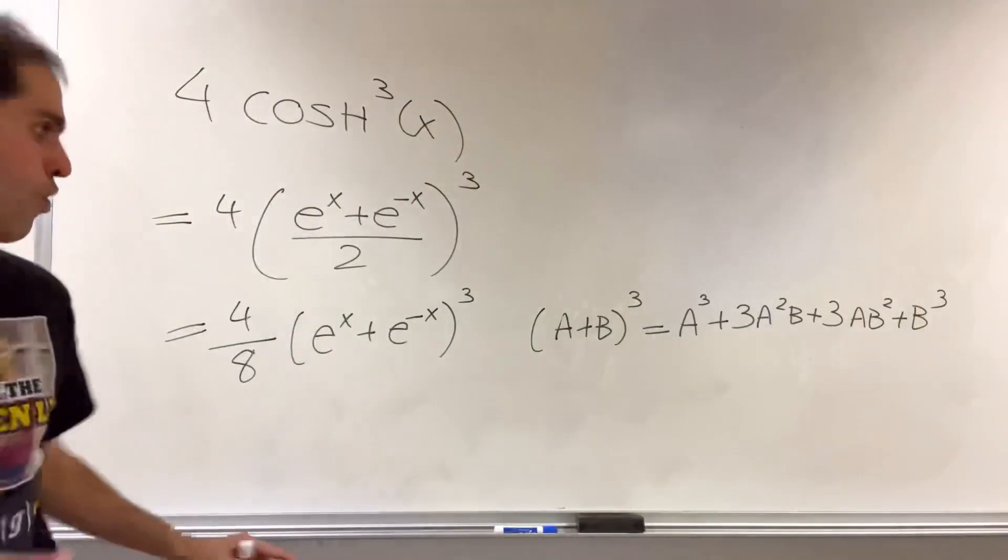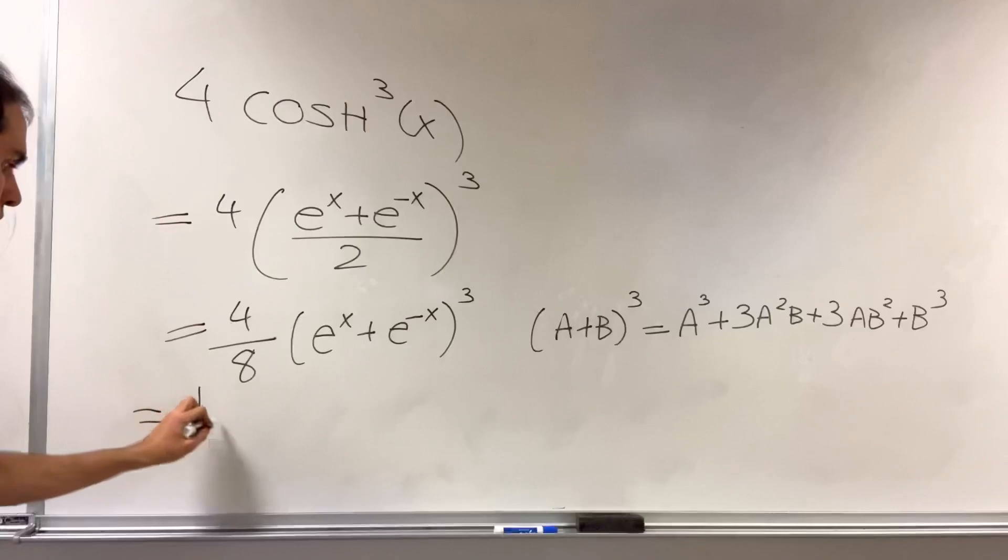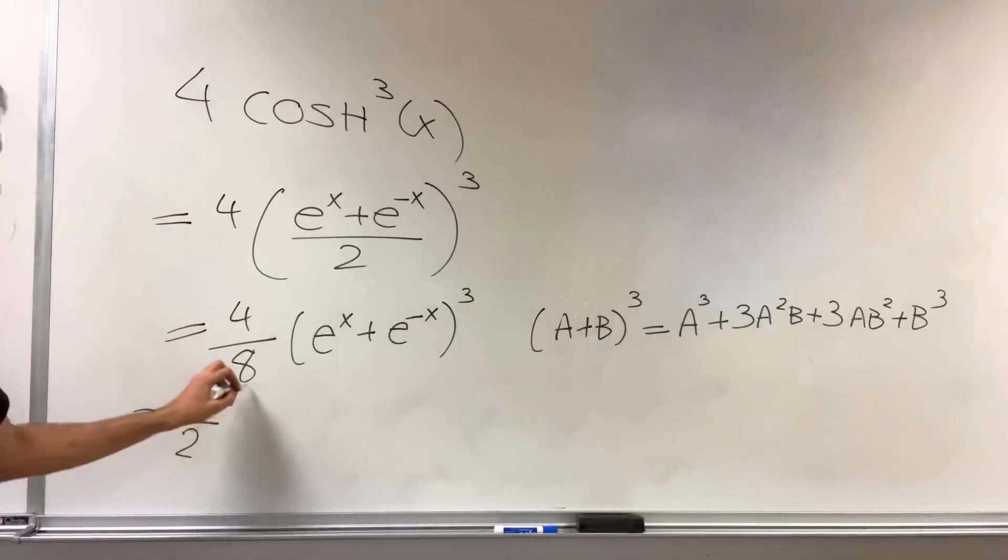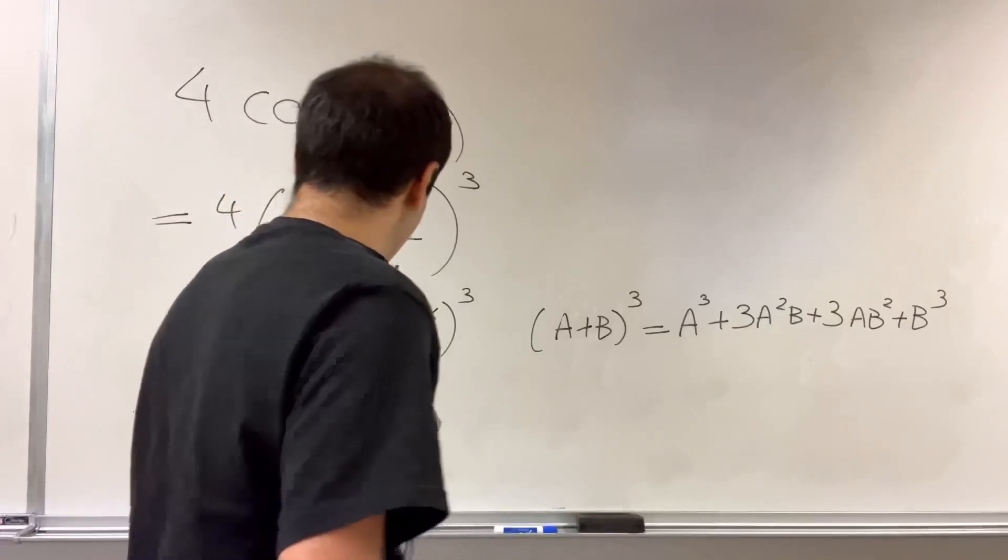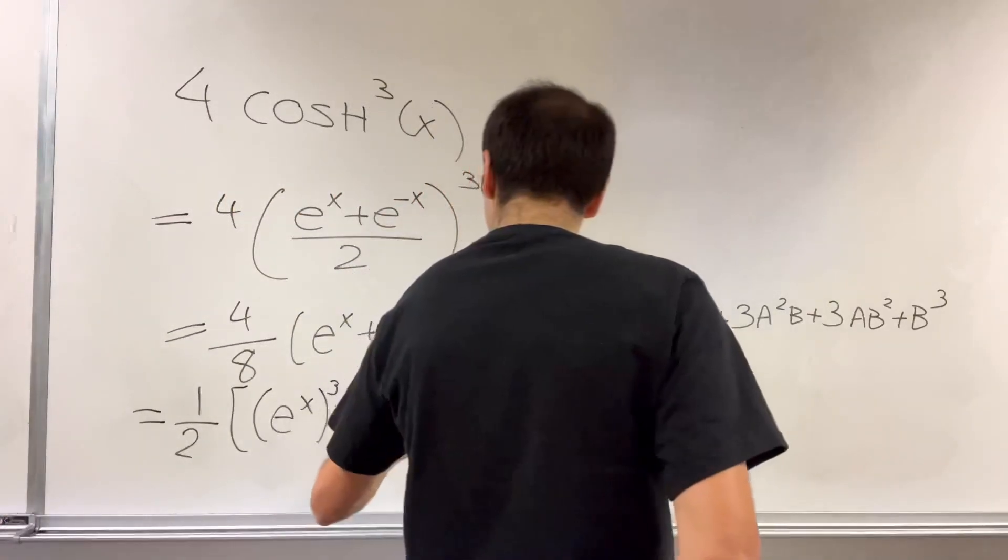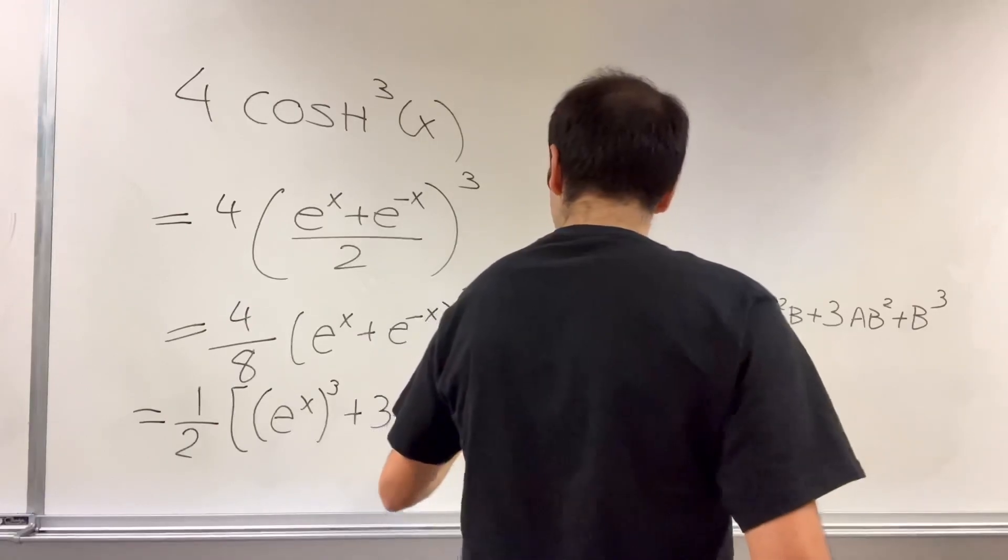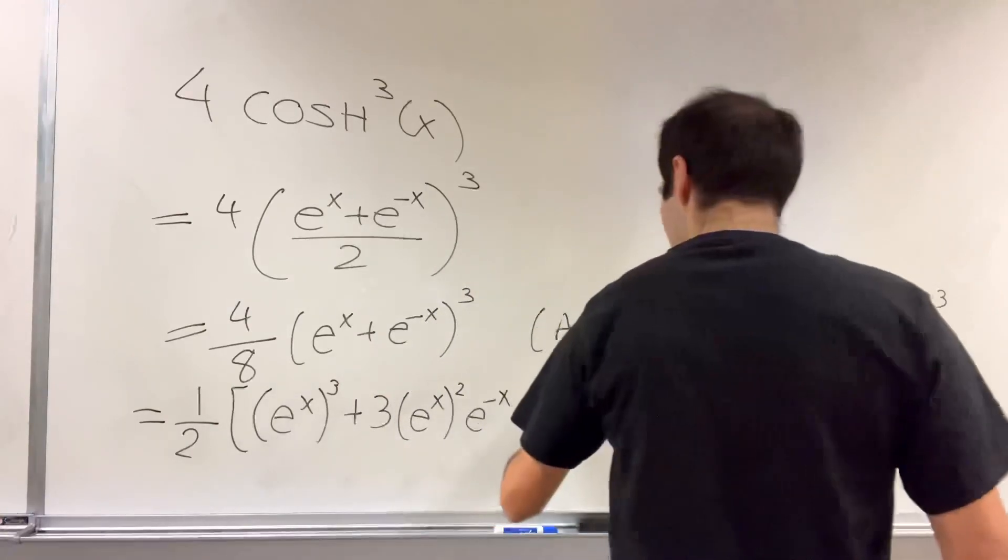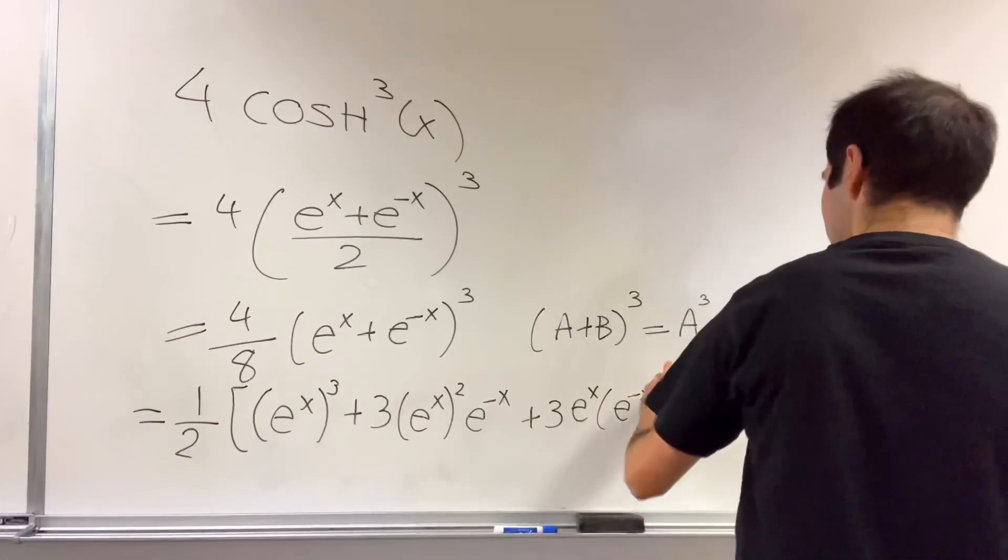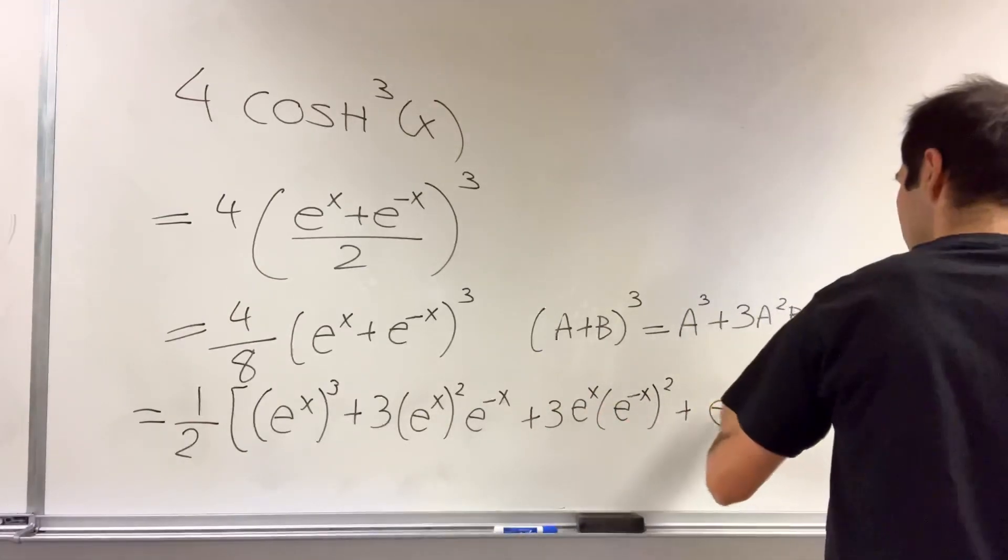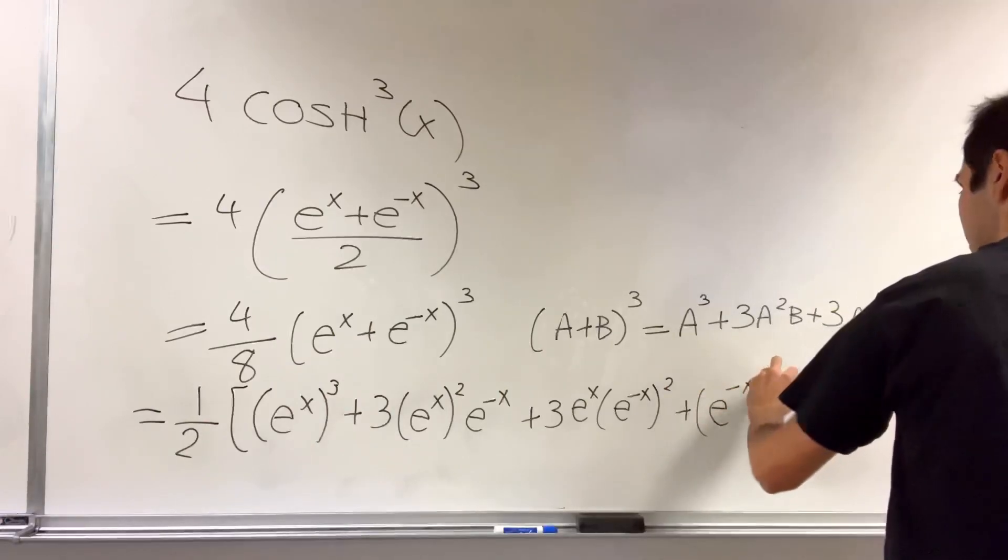And therefore, what this becomes, it's 1 half e to the x cubed plus 3 e to the x squared e to the minus x plus 3 e to the x e to the minus x squared plus e to the minus x cubed.